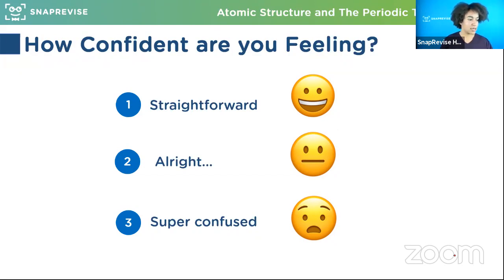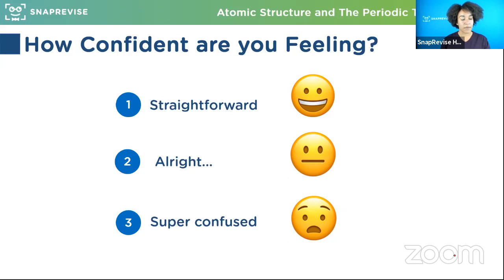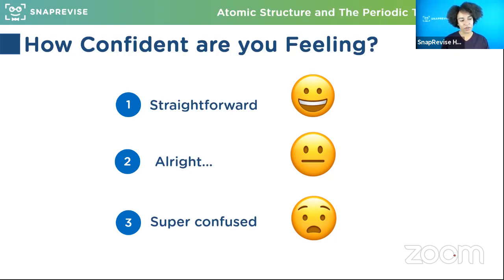Send me your emojis - how are we doing? How do you know what to round to? You want to round to whatever they do in the question. The standard for A-level is two decimal places, but if they put more or less in the question then stick to those. Two decimal places is the most common.